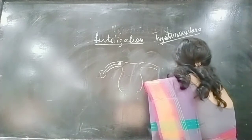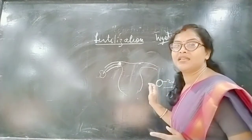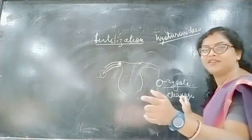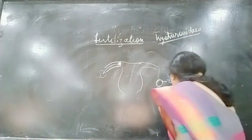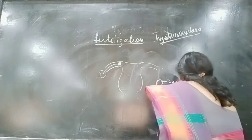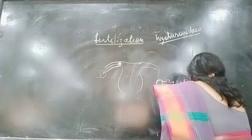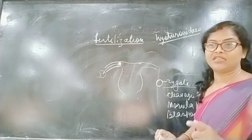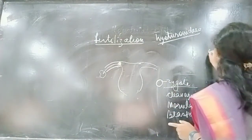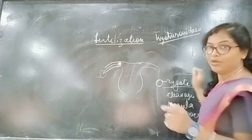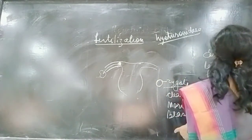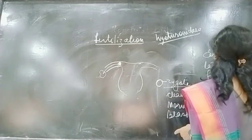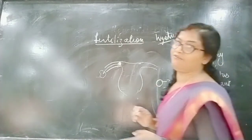After the zygote, cleavage starts. Then the morula phase begins. After morula, blastocyst phase starts. Then early embryo, then late embryo, then fetus, and finally from fetus to infant. These are the step-by-step developmental phases.